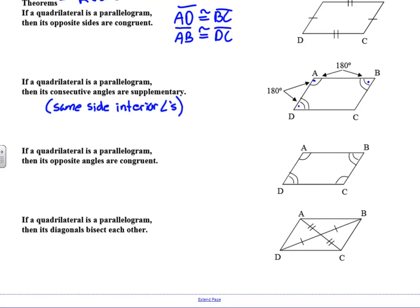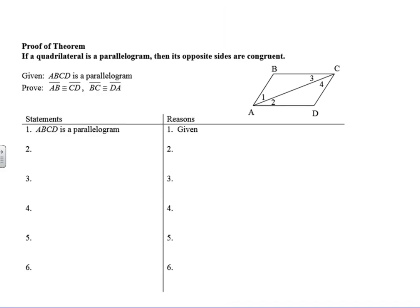Another theorem: if a quadrilateral is a parallelogram, then its opposite angles are congruent. So angle A is congruent to angle C, and angle D is congruent to angle B. And if a quadrilateral is a parallelogram, then its diagonals bisect each other, forming those congruent segments.